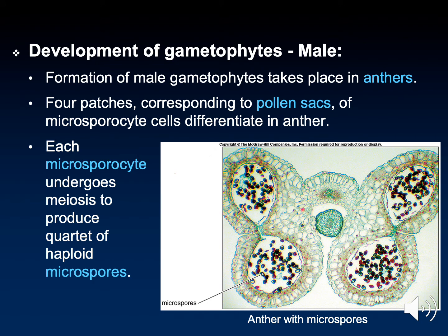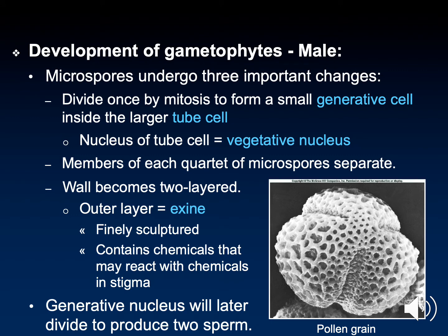Male gametophyte structure is similar to the female. The difference is that you do not have three cells degenerating after the initial meiosis. You begin with a microsporocyte, which is diploid. It undergoes meiosis resulting in four haploid microspores. The four microspores eventually develop into pollen grains. Inside each microspore is a nucleus with a single set of chromosomes. The microspores then undergo mitosis.